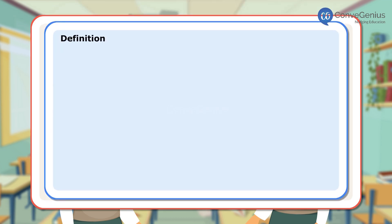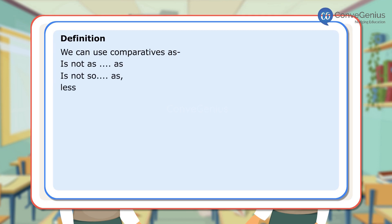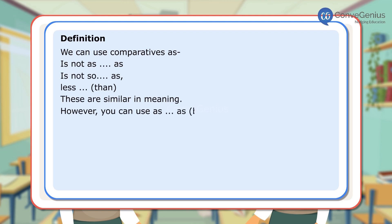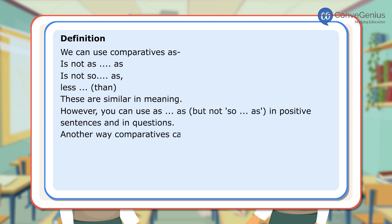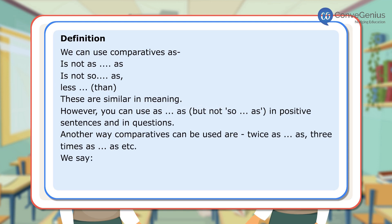We can use comparatives such as 'is not as...as,' 'is not so...as,' and 'less...than' — these are similar in meaning. However, you can use 'as...as' but not 'so...as' in positive sentences and in questions. Another way comparatives can be used: 'twice as...as,' 'three times as...as,' etc. We say 'the same as,' not 'the same like,' and 'than me' or 'than I am,' etc.